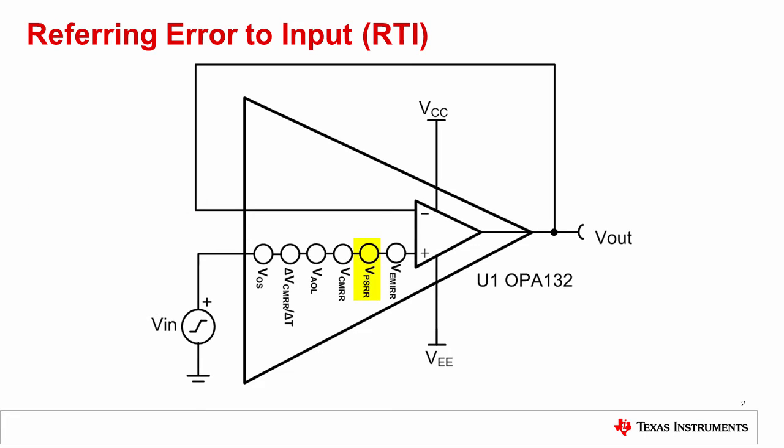Errors from power supply rejection, common mode rejection, open loop gain, and many other types of errors can be modeled as an input offset voltage connected to the non-inverting input of the op amp. This method of reflecting the error signal to the input simplifies the error analysis, as the error sources can be added together to find the total error.